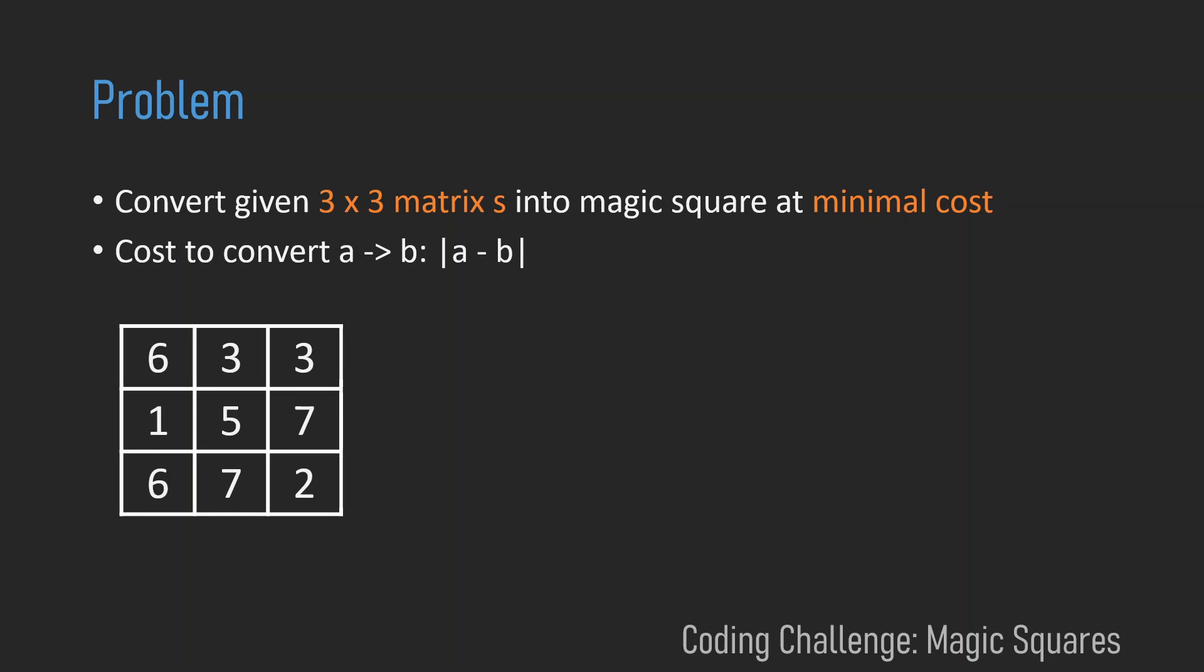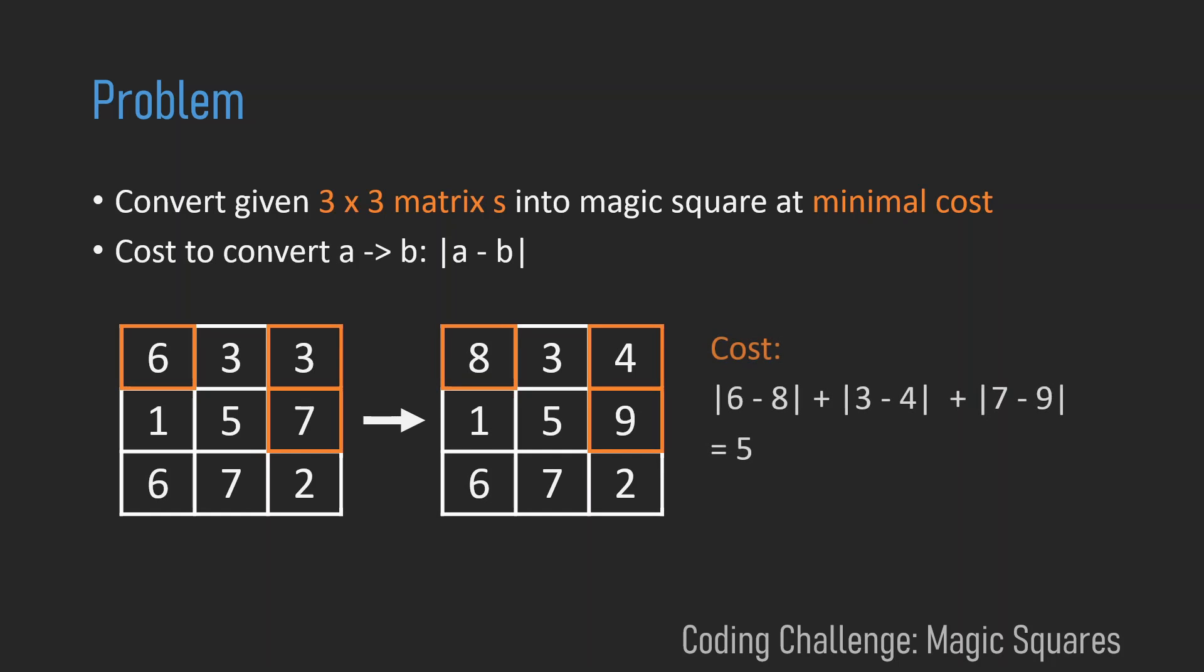So for example, let's look at this matrix that is not a magic square yet. But if we change those three entries, we get a magic square. And the cost of this conversion is |6 - 8| + |3 - 4| + |7 - 9|, which is equal to 5.